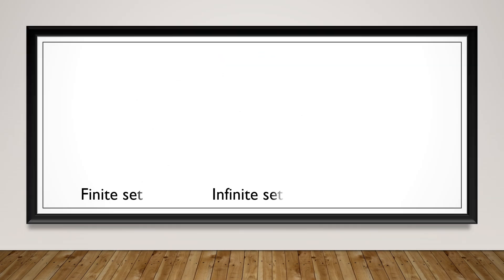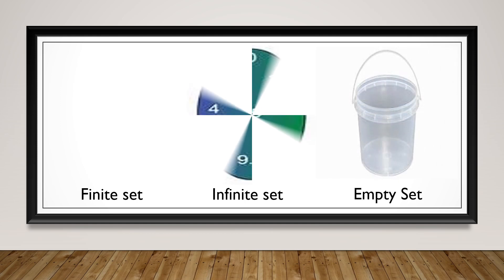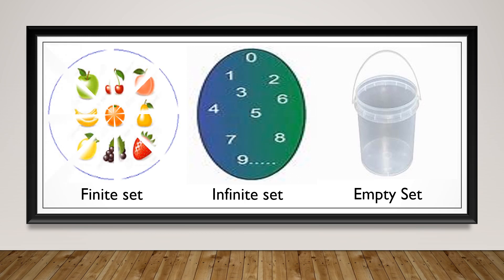Now let's see if we can distinguish between these types of sets. We have our finite sets, our infinite sets, and our empty set. We have a set of fruits for our finite set, and we are able to count the members: one, two, three, four, five, six, seven, eight, nine.